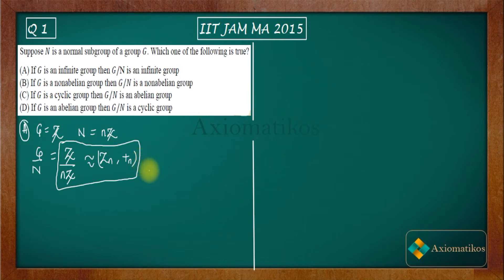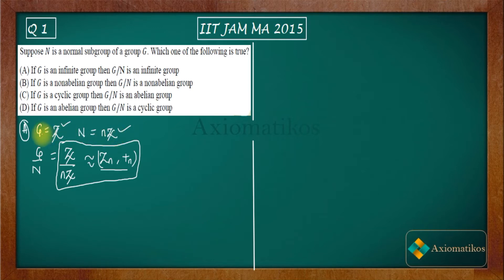Either you know this result or you have to remember that Z by nZ is isomorphic to Z_n. Now see — Z_n is a finite group. According to option A, if G is an infinite group, then G by N should be an infinite group. I have taken G to be an infinite group, and N is normal because G is abelian and every subgroup of an abelian group is normal. But Z by nZ is not an infinite group. That means option A is incorrect.